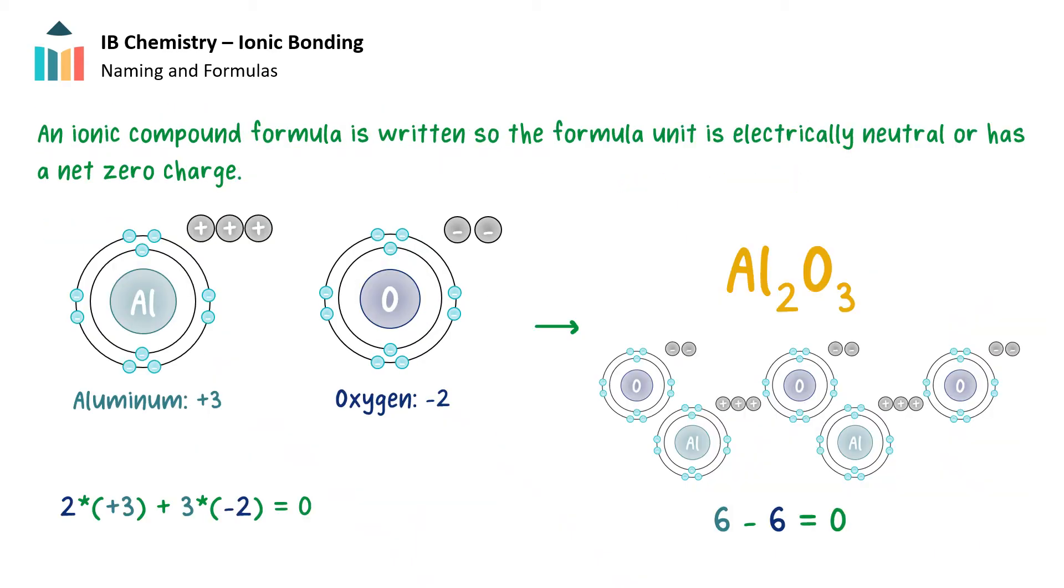An ionic compound formula is written so the formula unit is electrically neutral or has a net zero charge. For example, if we look at an aluminum cation with a +3 charge and an oxygen anion with a -2 charge, we determine the least common multiple, allowing equalization of these charges. Both 2 and 3 go into 6.